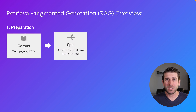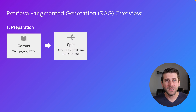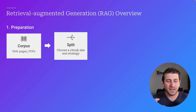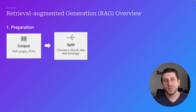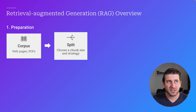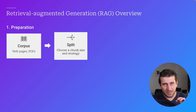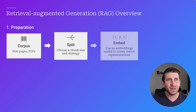Then we're going to split it up — this could be by paragraph or by section. You want to try to keep related text together so that when you're inserting into the model, you're getting a whole concept, because you want useful information the model can use to answer questions. So there's a lot of ways to split your data, but you need to split it up, make a choice, and then insert it into your database.